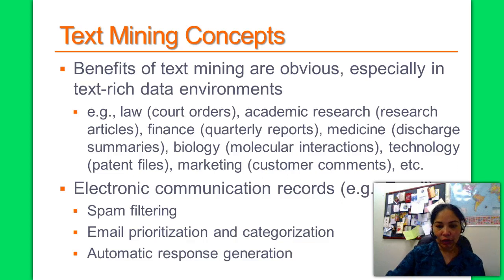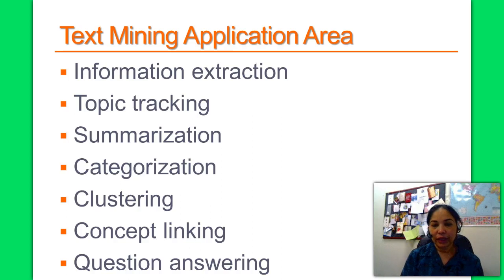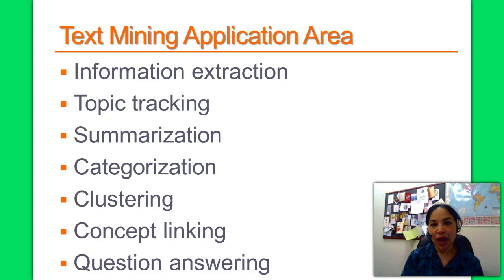The application areas of text mining include information extraction, topic tracking, summarization, categorization, clustering, concept linking, and question answering. In information extraction, we identify key phrases and relationships within text. In topic tracking, text mining can predict other documents of interest based on documents the user has previously viewed. Summarization relates to summarizing a document to save time on the part of the reader.